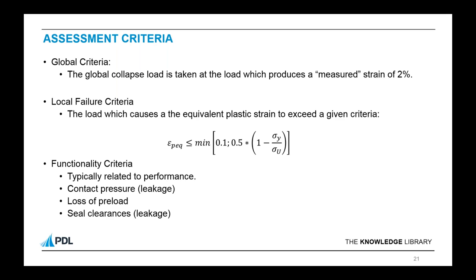The local failure criteria doesn't typically cause problems, but you do need to be careful with threaded models where you might start getting quite peaky strains where edges are contacting — there is an element of judgment as to what a valid local failure is or isn't. Finally, we need to think about functionality criteria, which will be specific to the particular connection. Fairly generic ones will be around sealing — for metal-to-metal seals that might be a contact pressure to make sure we're not going to get leakage — it could be loss of preload or clearances at elastomeric seals.